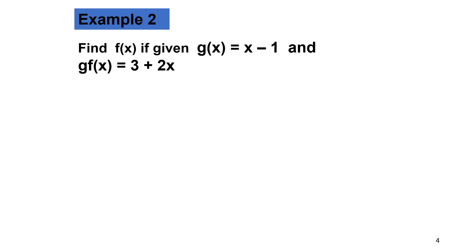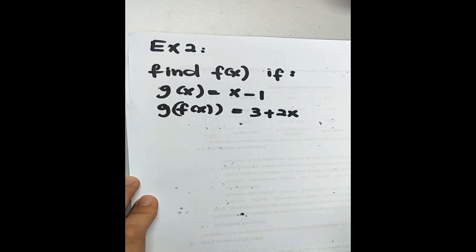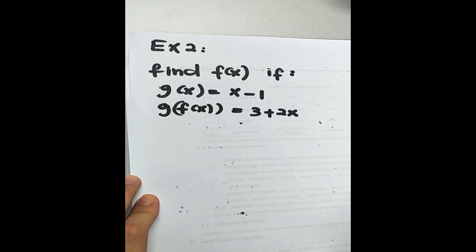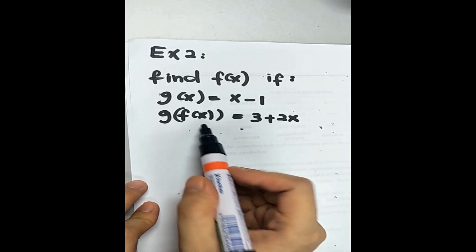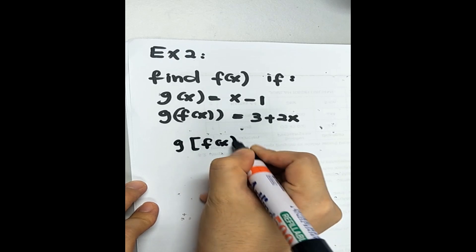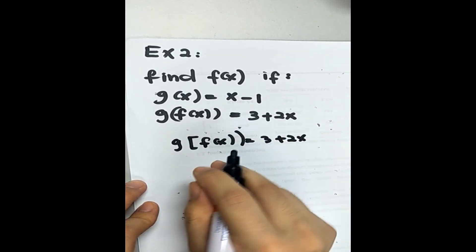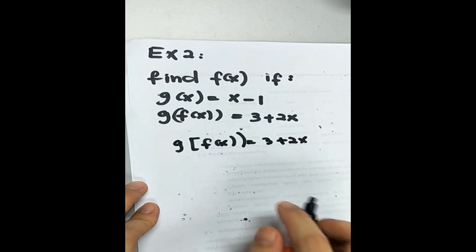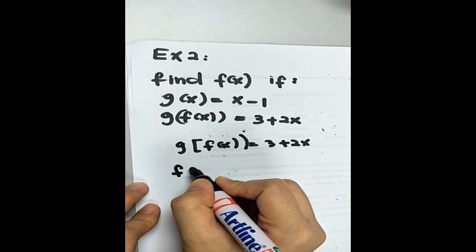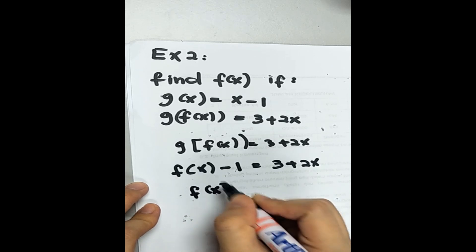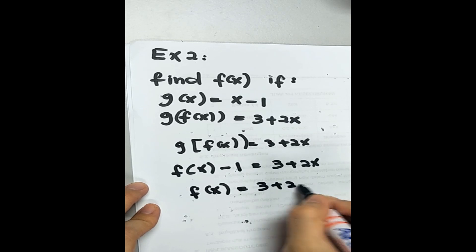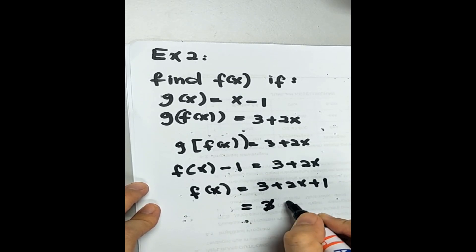Example 2: Find f(x) if g(x) = x minus 1 and g composite f(x) = 3 plus 2x. So, g of f(x) = 3 plus 2x. You have to substitute f(x) into function g. Your g is x minus 1. So, f(x) minus 1 = 3 plus 2x. Move negative 1 to the right-hand side: f(x) = 3 plus 2x plus 1. So the answer is f(x) = 4 plus 2x.